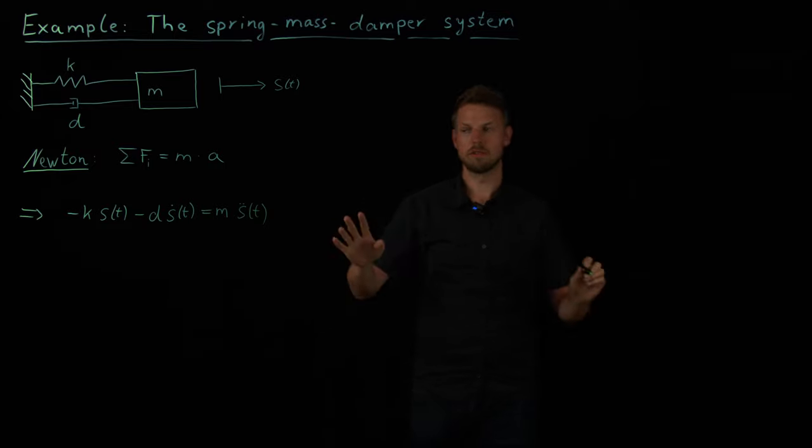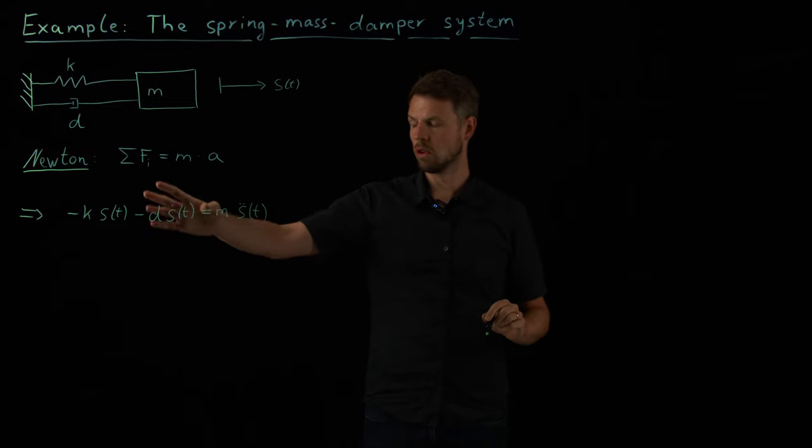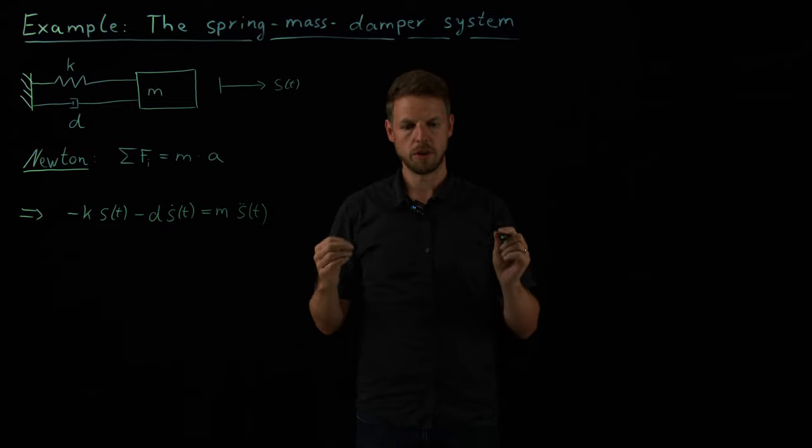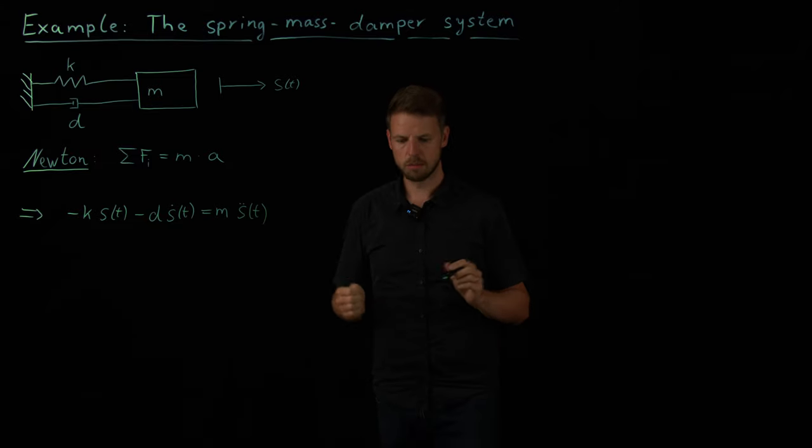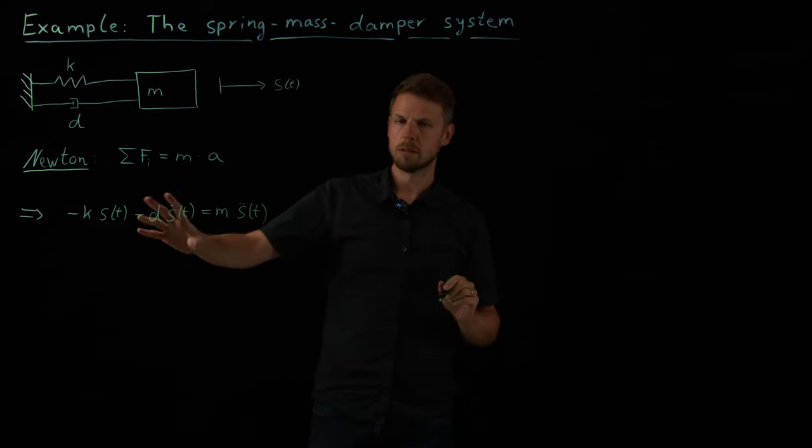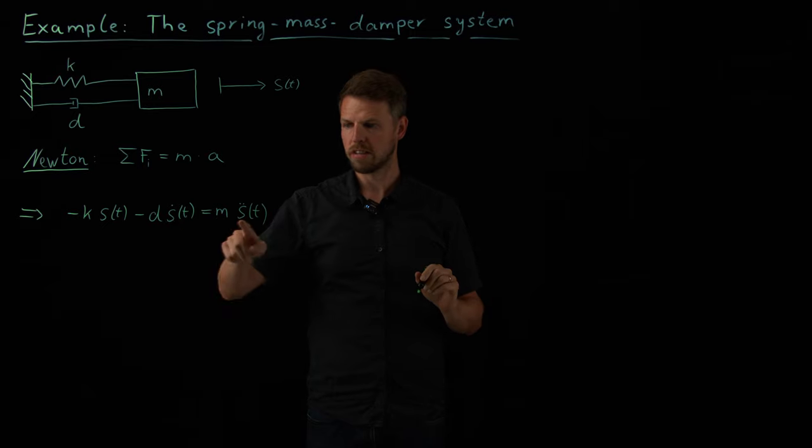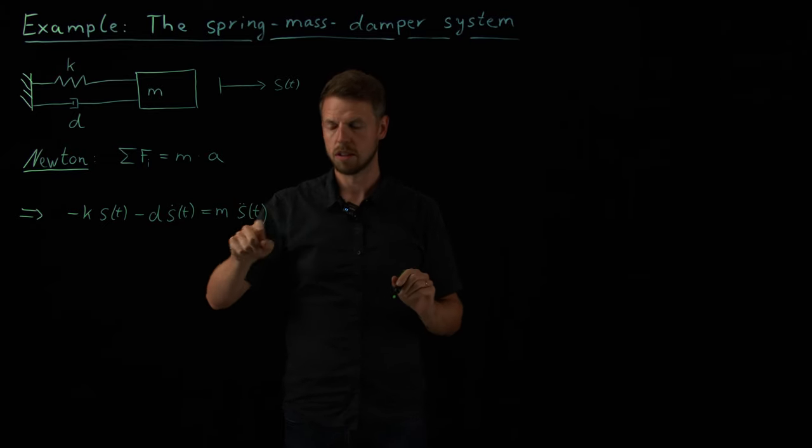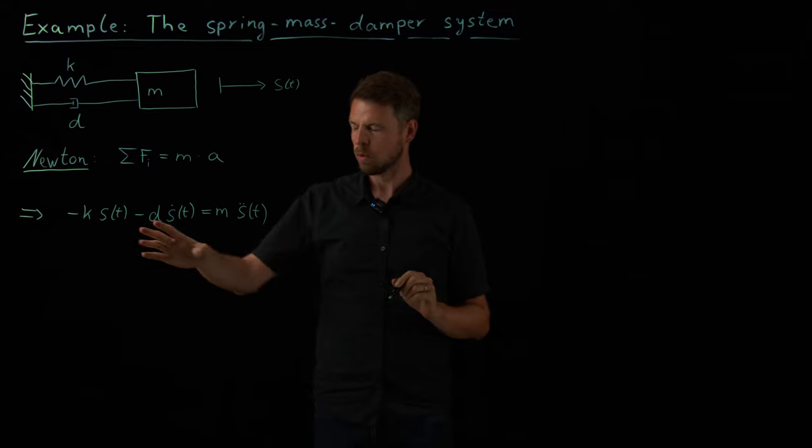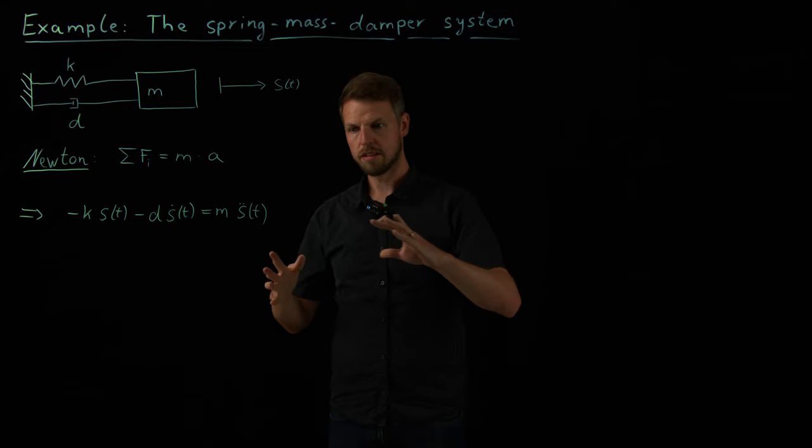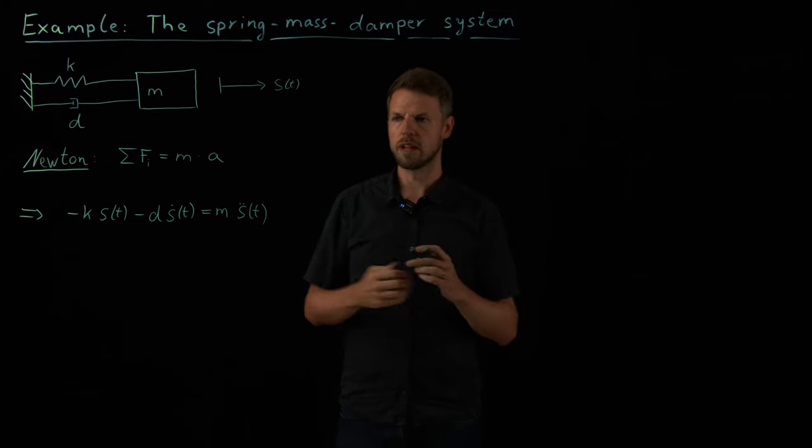So this is the change in velocity over time, or the second derivative of the position. And so here we have, as I said, for the simple system, using Newton's law only, a mathematical equation that defines the system dynamics. But this looks a little bit different from what we know. This is what we call a second order differential equation, because we have a second derivative in time. And we would now like to get this classical state space description that we had earlier.